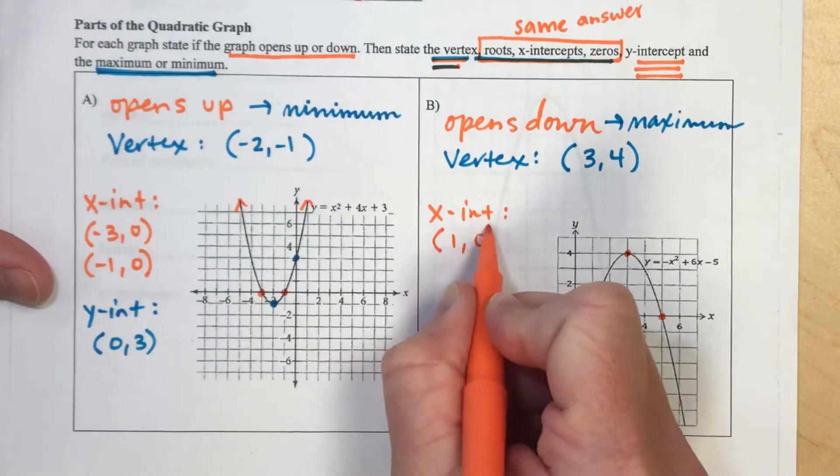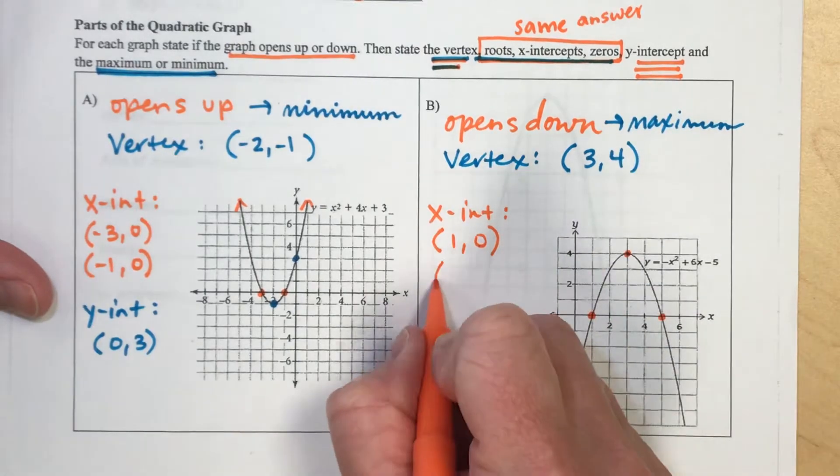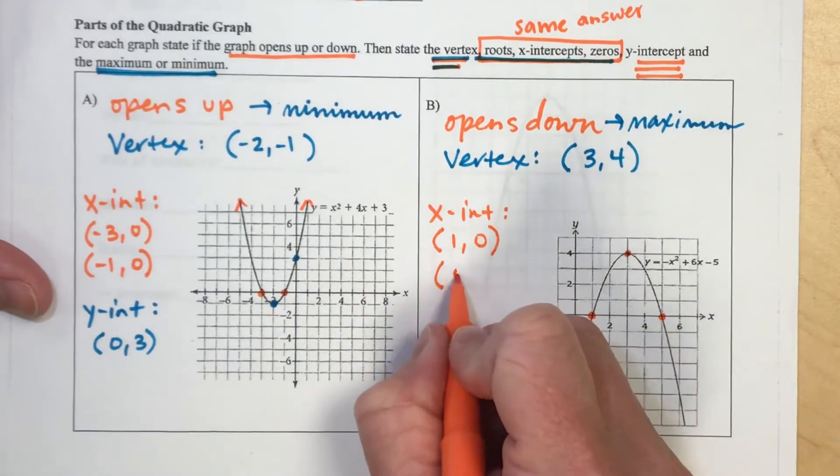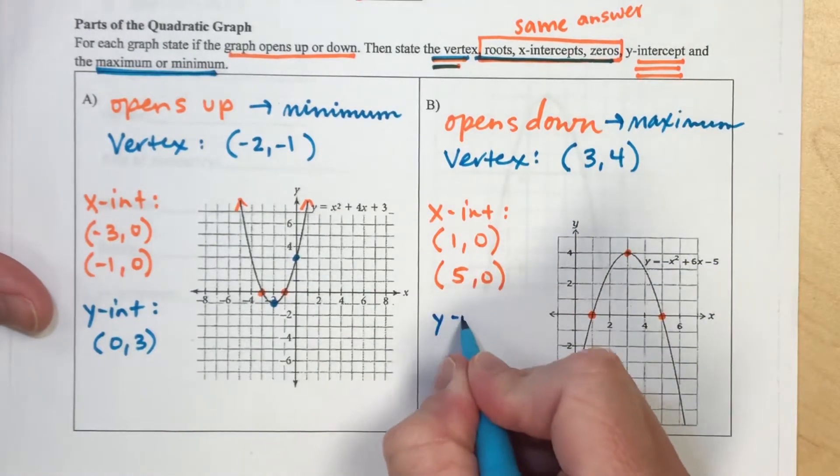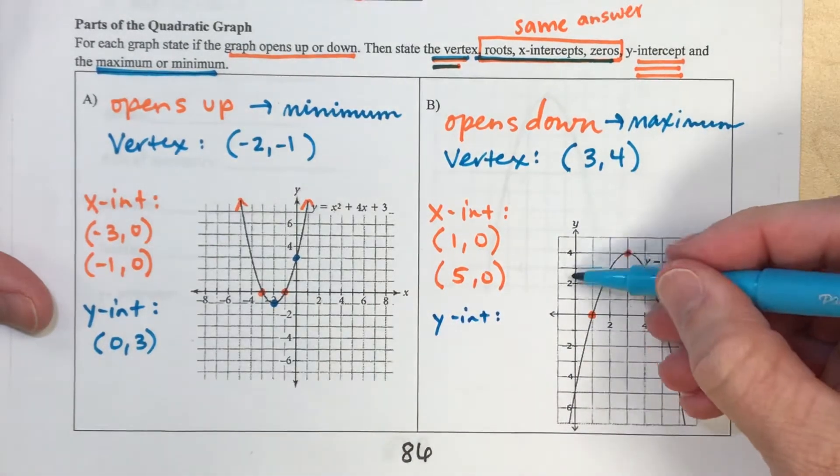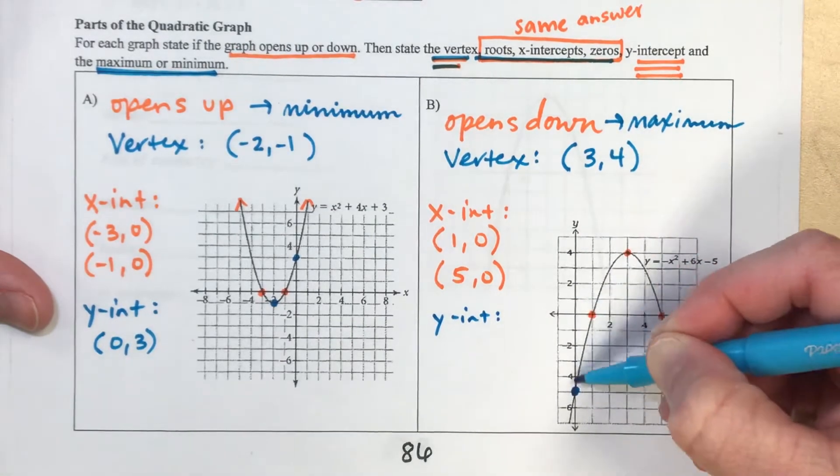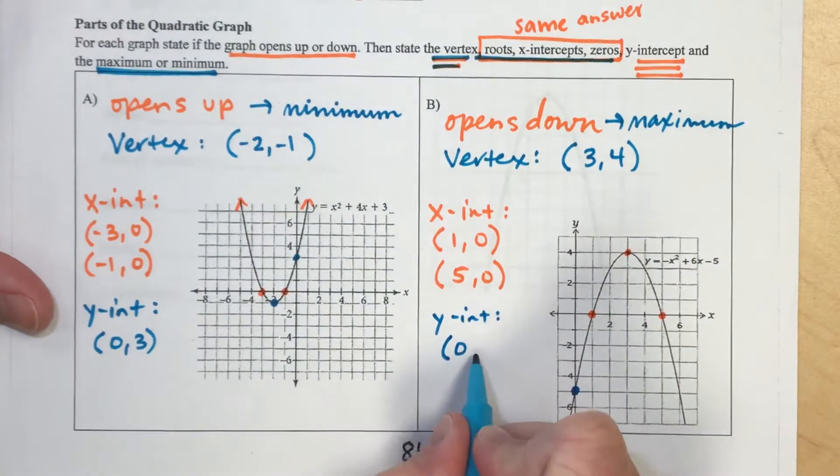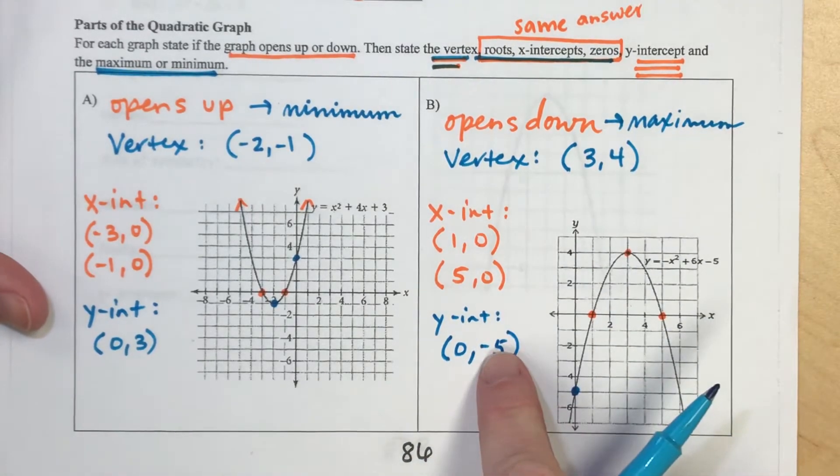Because we're looking at an x-intercept, so that number should be in the x value of your coordinate pair, and then also 5, 0. And then our y-intercept is last. So looking at my y-axis, it looks like it hits right here. It looks like down 5. So since it's a y-intercept, that value should go in the y value of your point.